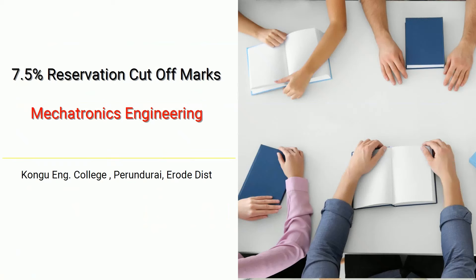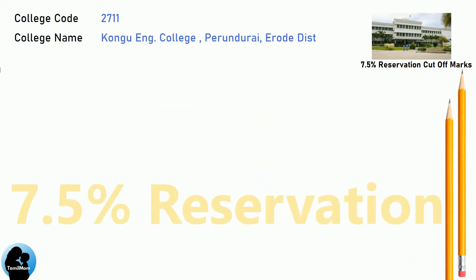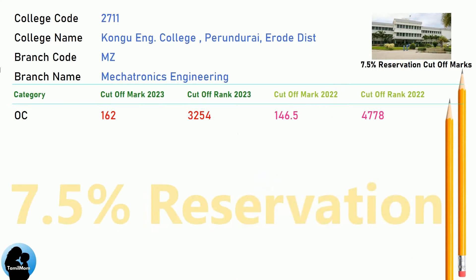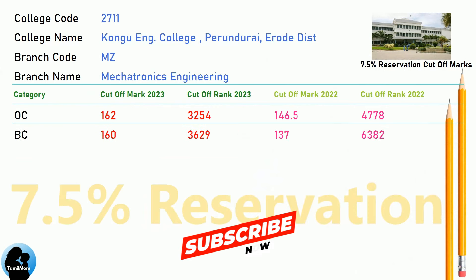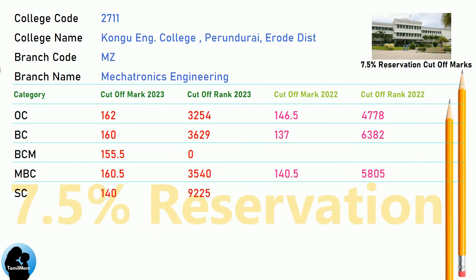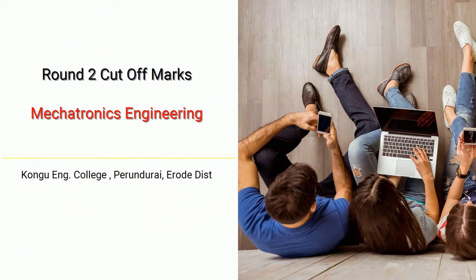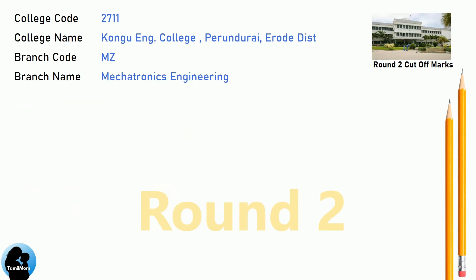DNEA 7.5 Reservation Cut-Off for Kongu Engineering College in Mechatronics Engineering. DNEA Round 2 Cut-Off for Kongu Engineering College in Mechatronics Engineering.